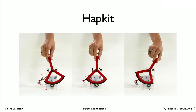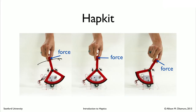To review, the Hapkit is a force feedback, grounded type haptic device, which is also a manipulandum. As you move the Hapkit around in its workspace—simply a back and forth motion—forces can be applied to the user either pushing to the left or pushing to the right, providing kinesthetic force feedback to the human operator.